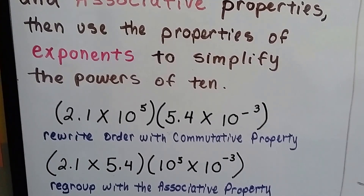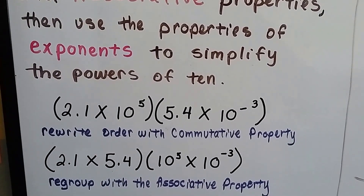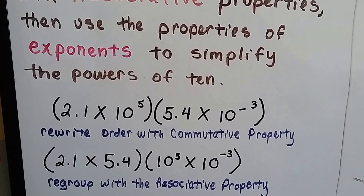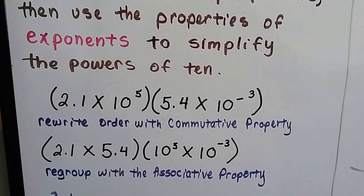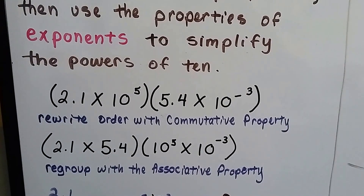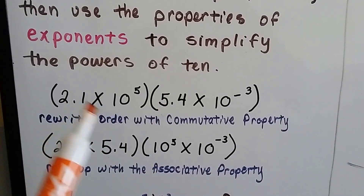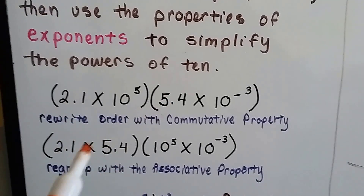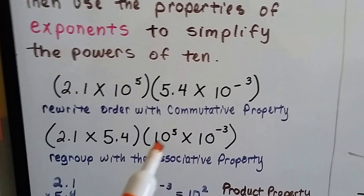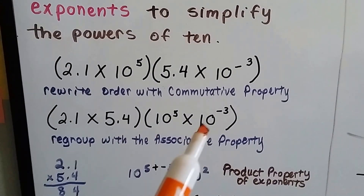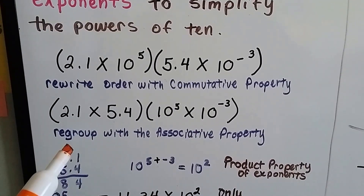If we see 2.1 times 10 to the fifth times 5.4 times 10 to the negative third, we can rewrite the order with the commutative property, moving the 2.1 and the 5.4 together and the powers of 10 together, and then we've regrouped it with the associative property.